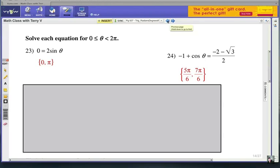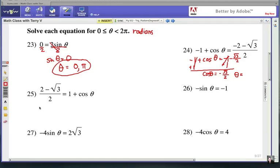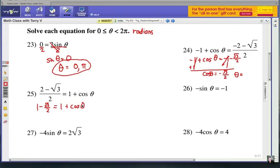Alright, here it is, 5π/6 and 7π/6. Alright, now I'm going to show you four more problems for you to try. Remember, your answers for theta have to be in radians, so simplify and solve those equations and figure out what theta is. Good luck. Number 25, that 2 is being divided into both parts, so that would simplify to 1 - √3/2 equals 1 + cos θ.